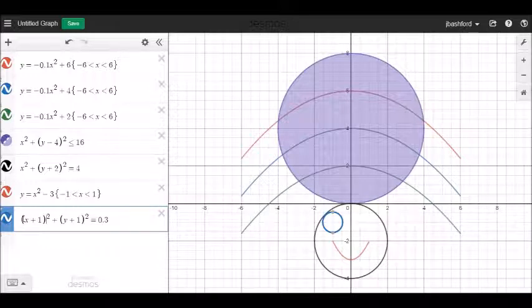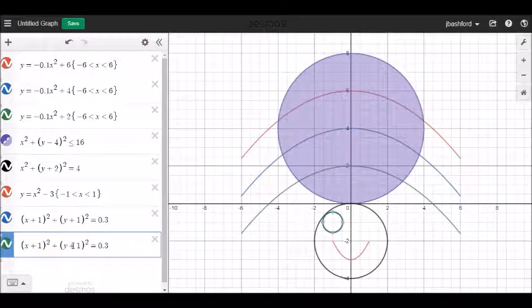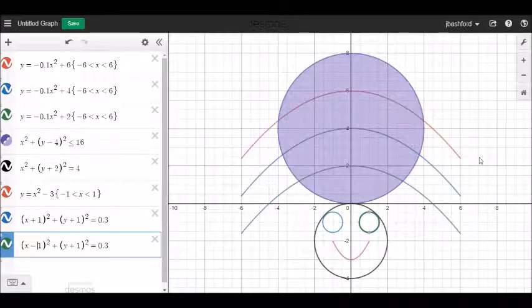And I'm going to copy this one this function for that last circle and just paste it here and see what happens if instead of adding one I subtract one. And there we've got another circle there.